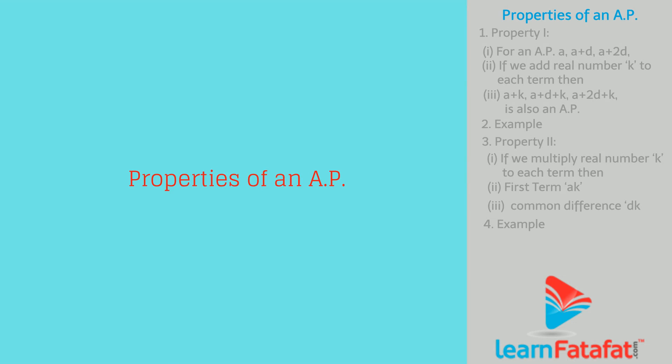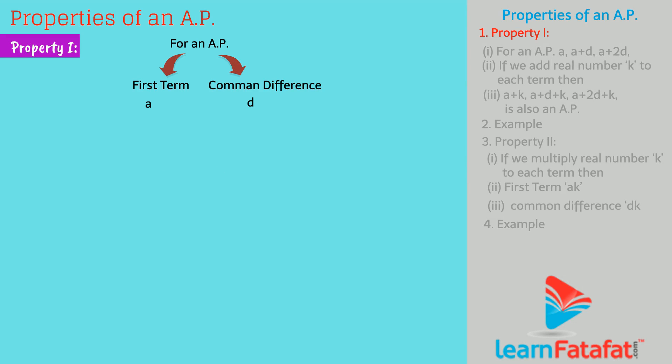Properties of an AP. Property 1: For an AP having first term a and common difference d, if any real number k is added to each term of the AP, then the new sequence so formed is also an AP.